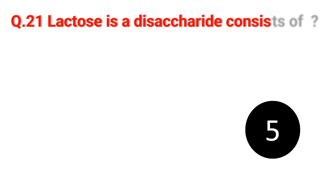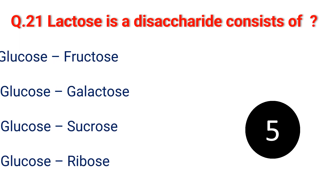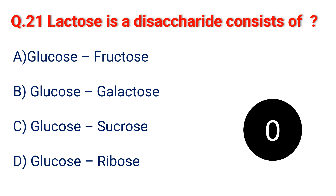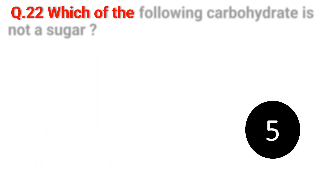Question 21. Lactose is a disaccharide consisting of: A. Glucose and fructose. B. Glucose and galactose. C. Glucose and sucrose. D. Glucose and ribose. The answer is B. Glucose and galactose.